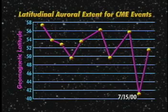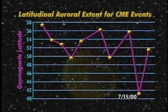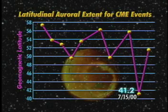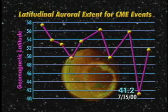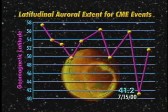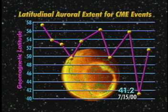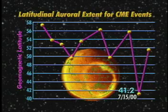On July 15, 2000, there was an auroral event that extended to latitude 41.2 degrees. The auroral activity was so intense that the auroral oval stretched into the southern parts of the United States.